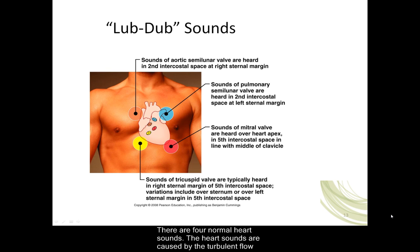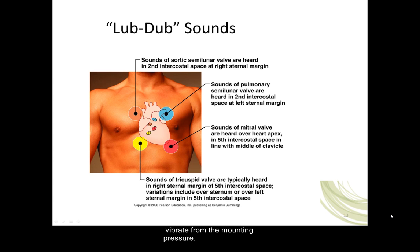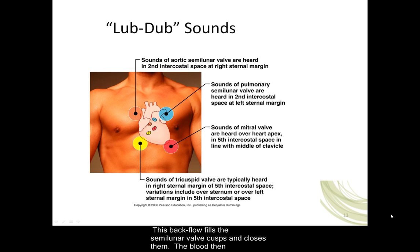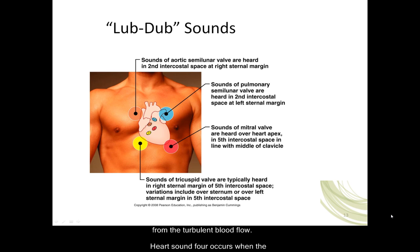There are four normal heart sounds, caused by the turbulent flow of blood and the vibrations of the heart valves. Heart sound one occurs when blood is pushed superiorly during ventricular contraction, causing the AV valves to close; all four valves are closed and the blood and ventricular walls vibrate from the mounting pressure. Heart sound two occurs when the ventricles relax and there is a momentary back flow of blood from the aorta and pulmonary trunk; this back flow fills the semilunar valve cusps and closes them, and the blood sloshes back and forth on top of these valves, creating sound. Heart sound three occurs from venous return during diastole: atrial blood pressure is greater than ventricular pressure and blood pours into the ventricles, creating sound from the turbulent blood flow. Heart sound four occurs when the atria contract and push extra blood into the ventricles.